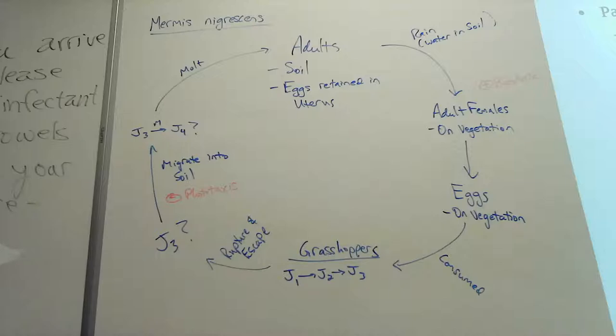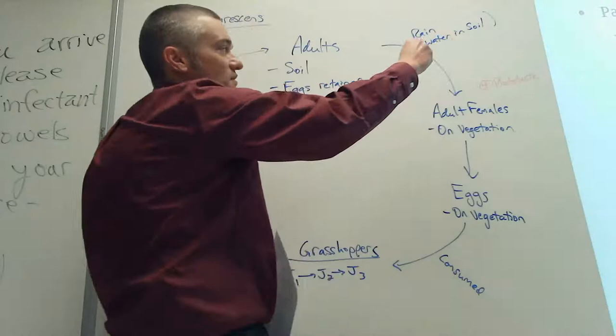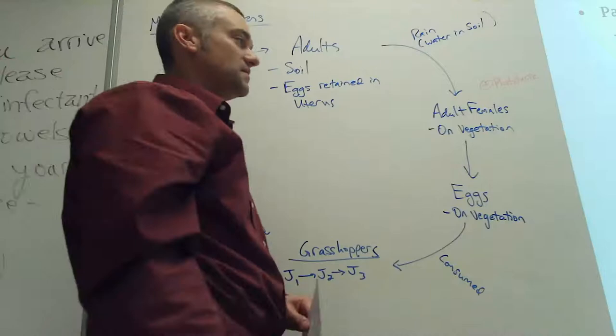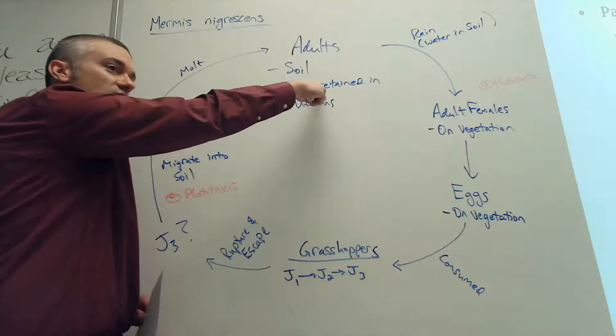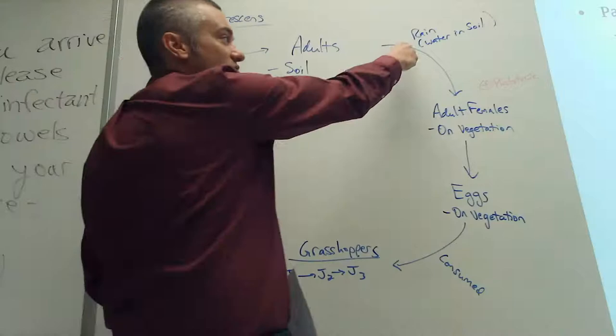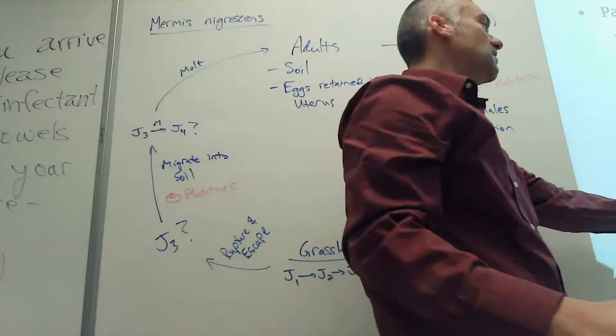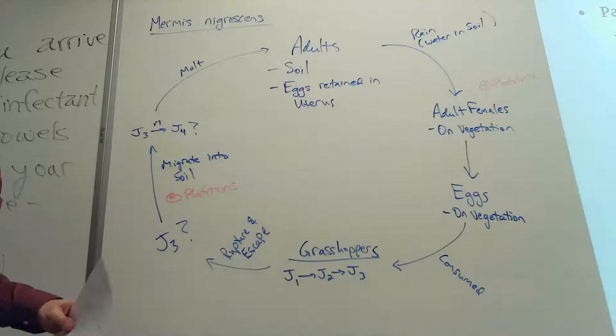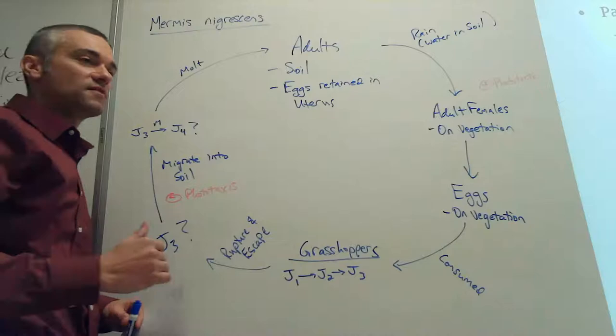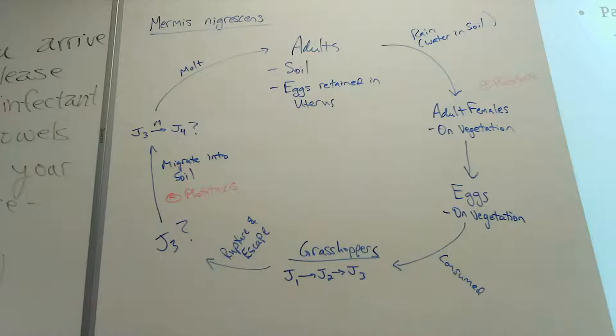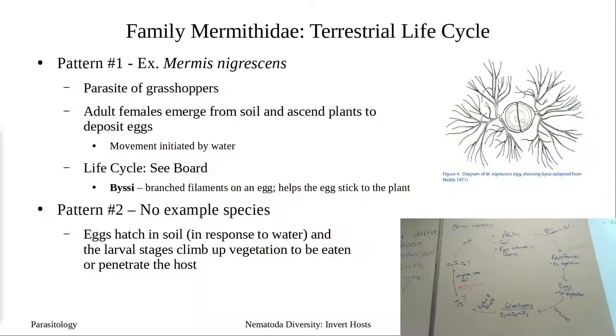On this terrestrial life cycle pattern, water is our signal and causes the adults to migrate up to plants. The second pattern — which we don't have this one — is that eggs are no longer retained in the uterus; they get released into the soil, and it's the eggs that hatch in response to water. Those larval stages then migrate up the plants to be consumed by or penetrate the host. Both patterns require water as the signal.